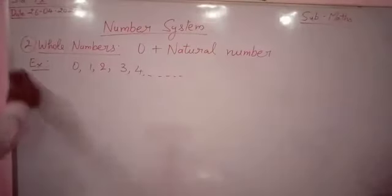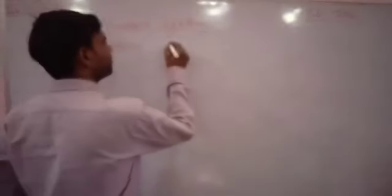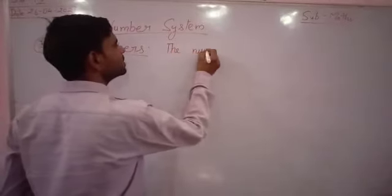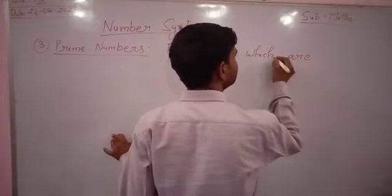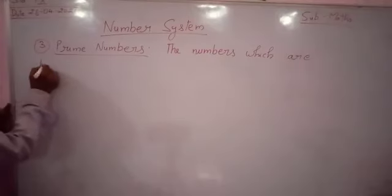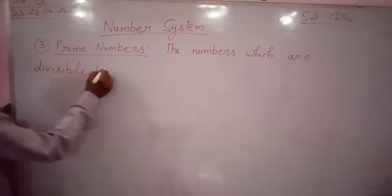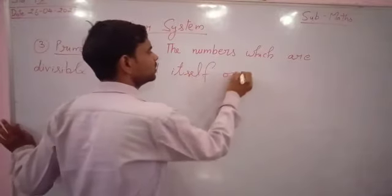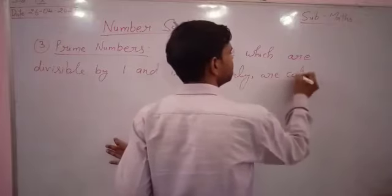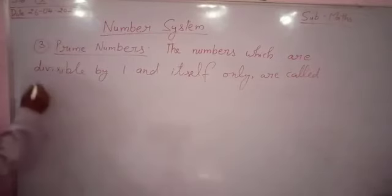After whole numbers we will see next prime numbers. Number 3 is prime numbers. What are prime numbers? The numbers which are divisible by 1 and itself only, except only 1 and itself, are called prime numbers.